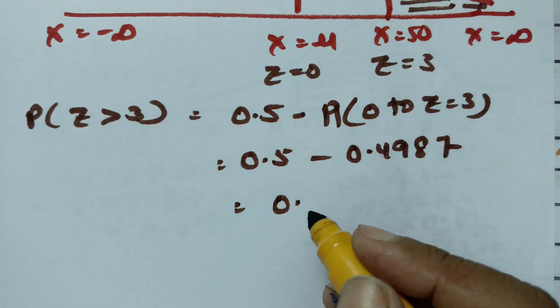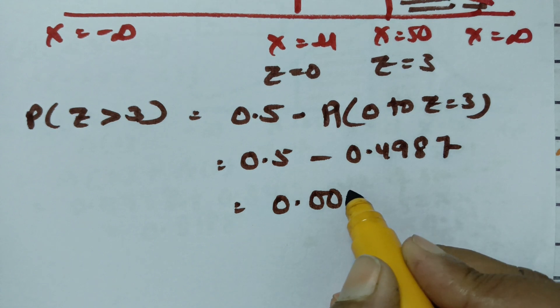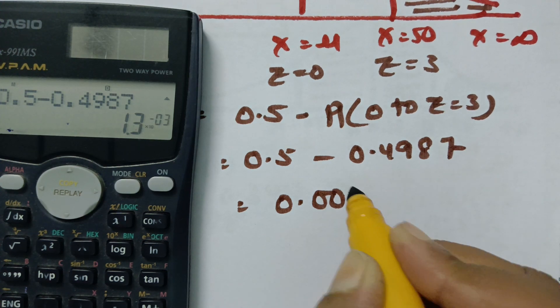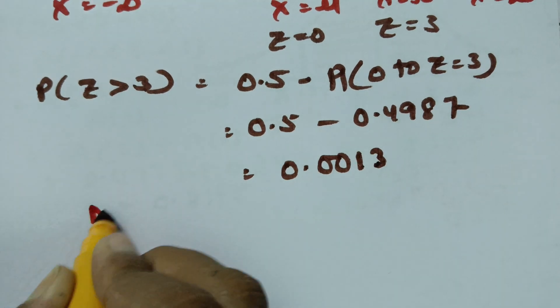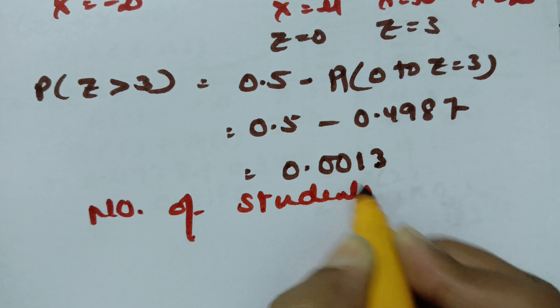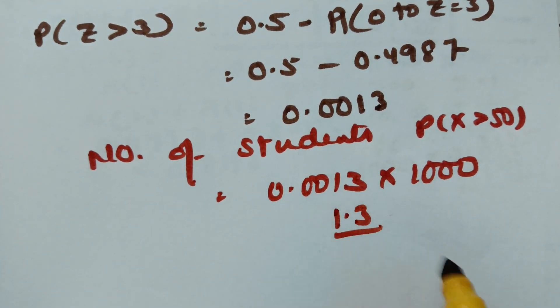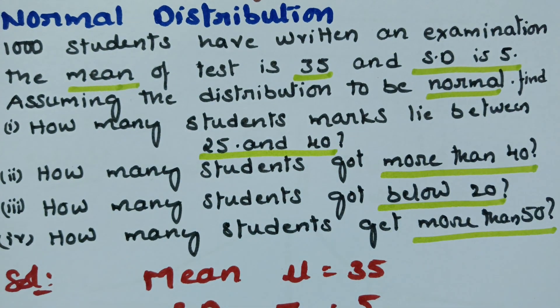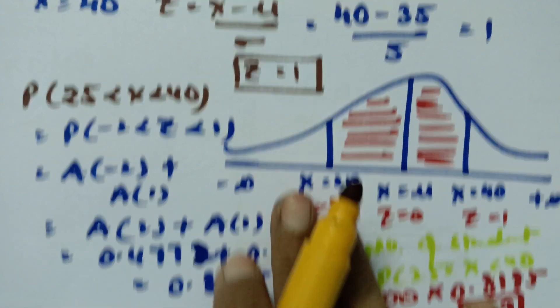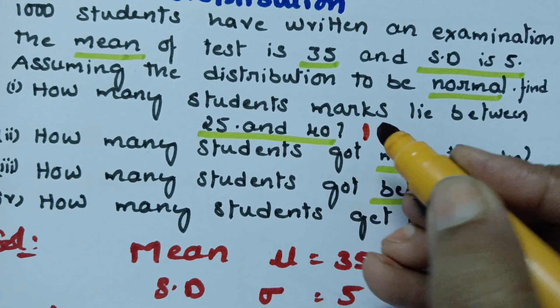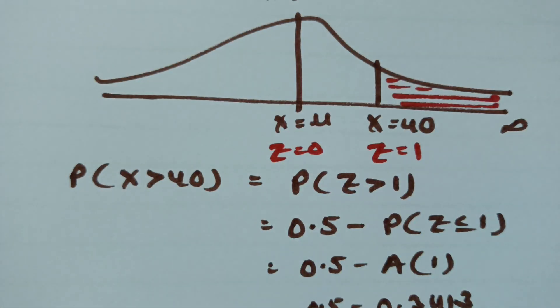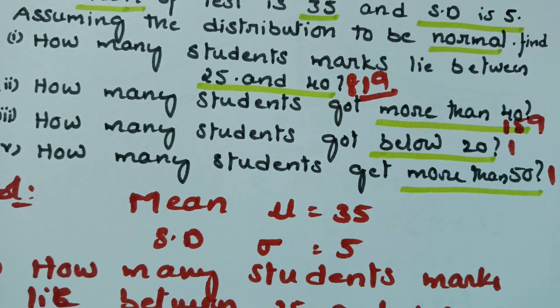Therefore the number of students who got more than 50 is 1000 × 0.0013 = 1.3, approximately 1 student. Summary: between 25 and 40 — 819 students; more than 40 — 159 students; below 20 — approximately 1 student; more than 50 — approximately 1 student.